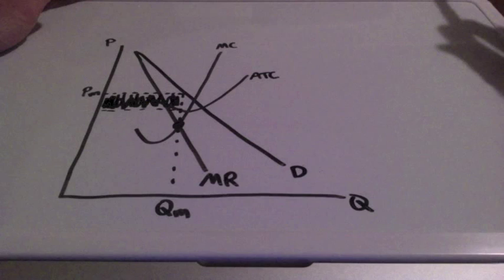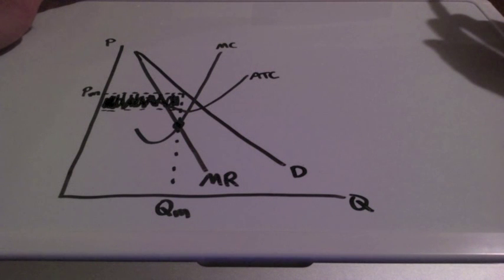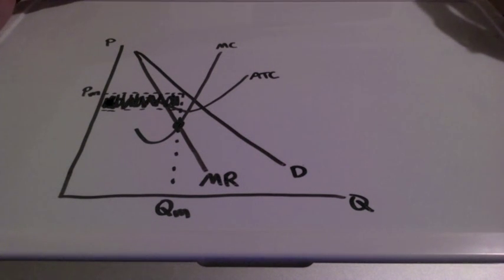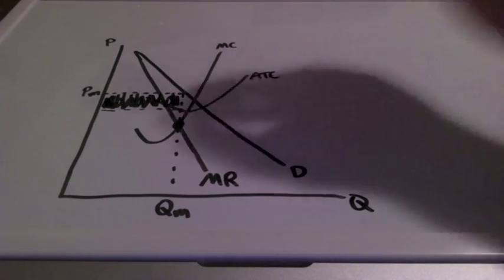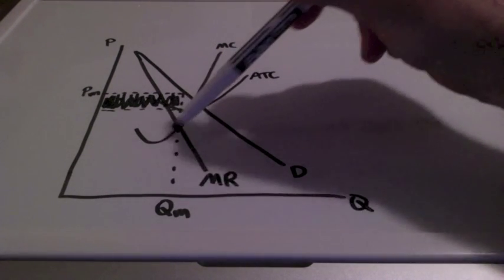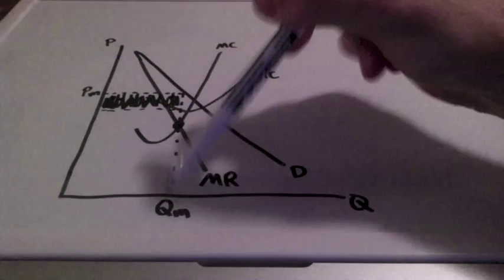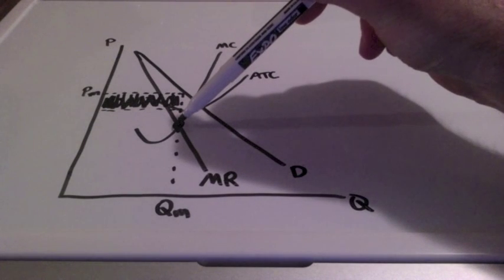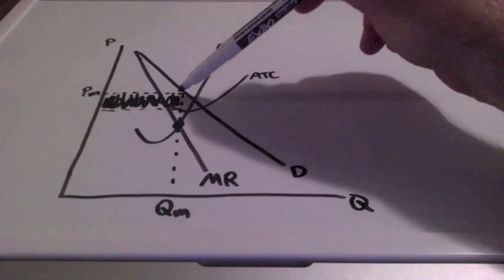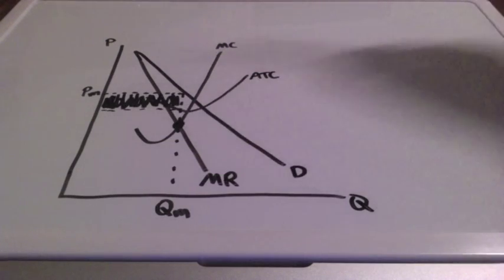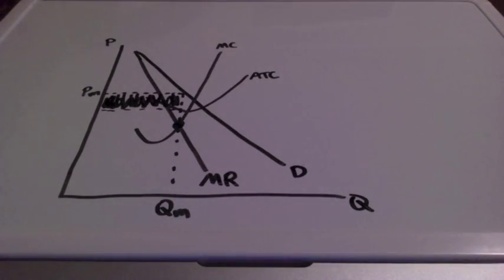This entire area represents profit. When a non-price discriminating monopoly is in the market, they are going to choose to keep their costs low. This is the profit maximizing quantity, and their price is high to maximize profits.